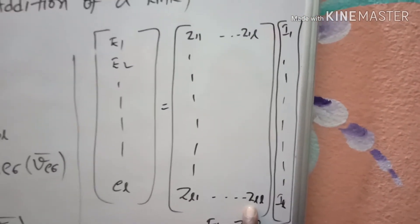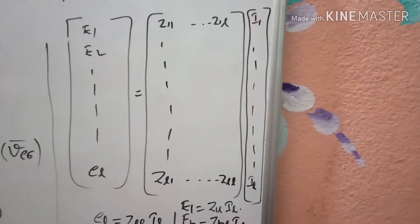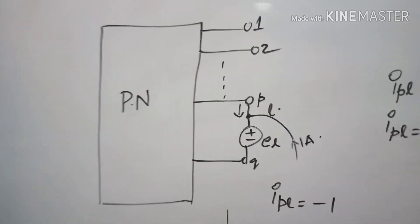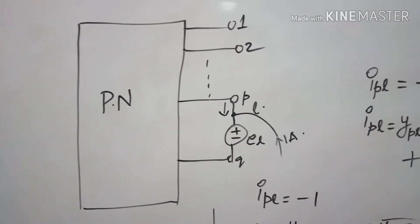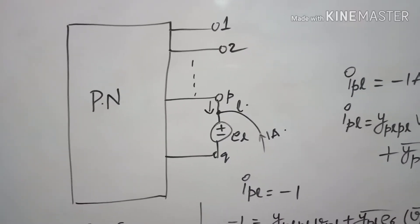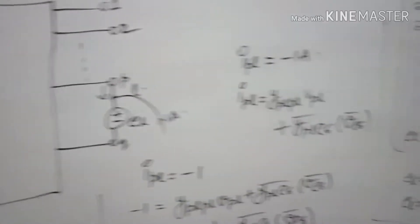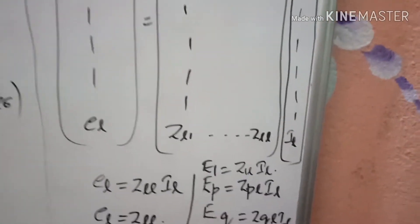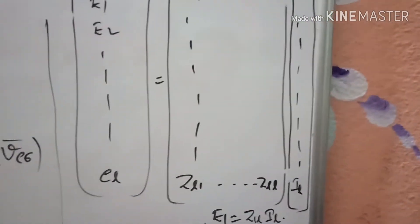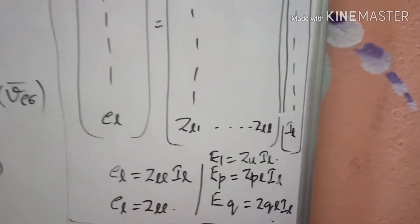This is the Z_ll value. What I need to do is inject a current of one ampere at the lth node. The lth node is nothing but a fictitious or imaginary node between nodes p and q. If I inject a current of one ampere at the lth node, making all the remaining currents as zero, I will get e1 as Z_1l into il.